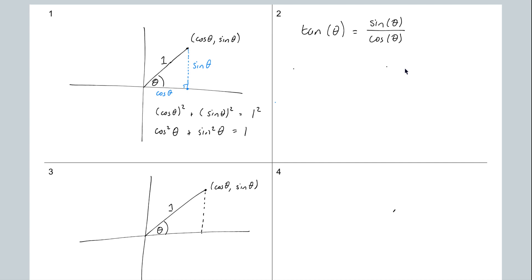Now if I go symmetrically down here at an angle of theta, the size of the angle is theta, then the coordinates here would be cos negative theta, sine negative theta. Let's call the origin point A, this upper point B, and this lower point C.